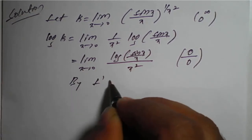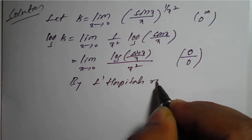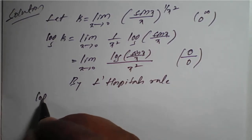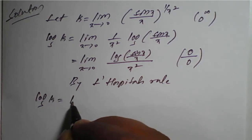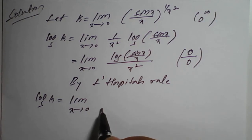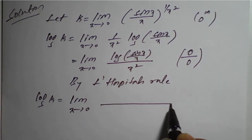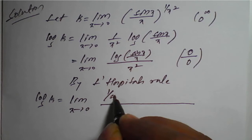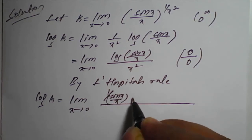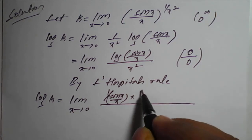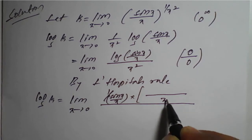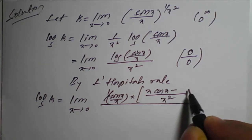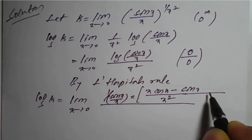By L'Hôpital's rule, log k remains as it is, equal to limit as x tends to 0. We differentiate the numerator and denominator separately. Differentiating log(sin x / x) gives 1 divided by (sin x / x), into the differentiation of (sin x / x). For that we apply the quotient rule: denominator squared, denominator into differentiation of sin x which is cos x, minus sin x into differentiation of x which is 1.